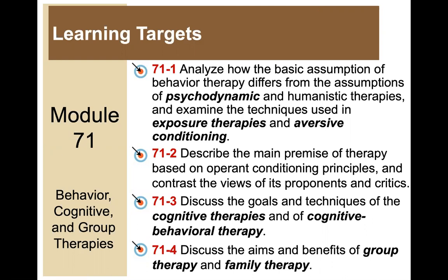The second target is to describe the main premise of therapy based on operant conditioning principles — you should be thinking back to what we've learned about B.F. Skinner — and contrast the views of its proponents and critics. Third, discuss the goals and techniques of the cognitive therapies and of cognitive behavioral therapy. And finally, discuss the aims and benefits of group therapy and family therapy.